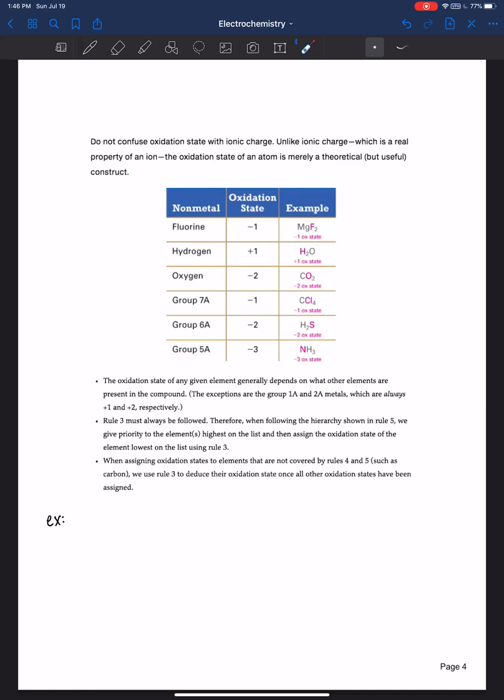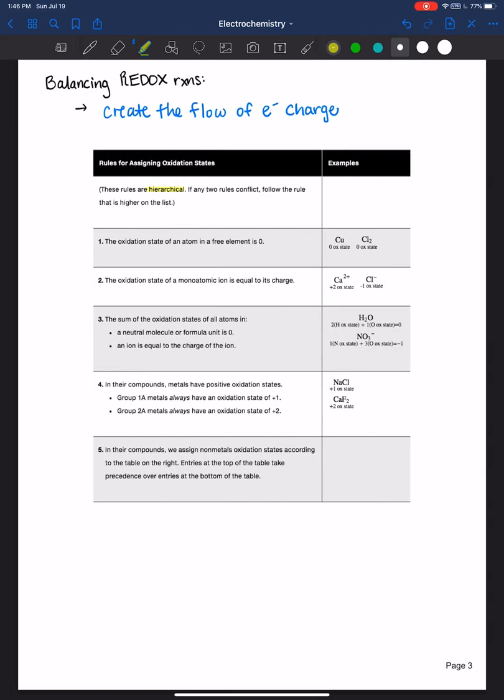As a side note, anything else that wasn't listed on this table just needs to be figured out such that rule number three is followed. You just work backwards such that rule number three follows. So if it's a neutral molecule, you need to figure out what this element must be so everything adds up to zero. You'll see that when we work examples.